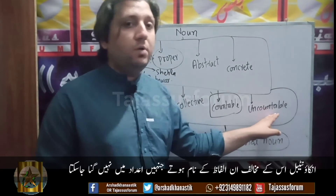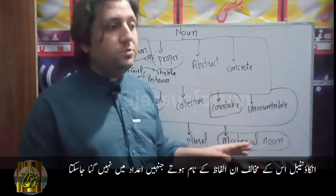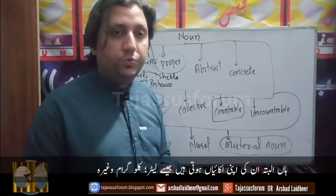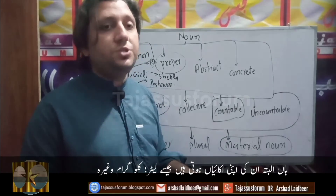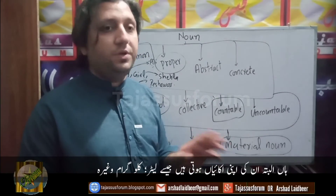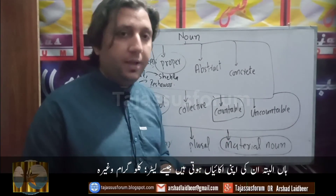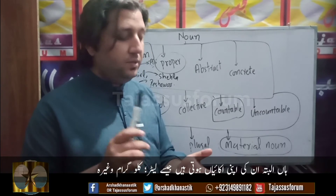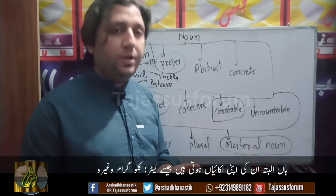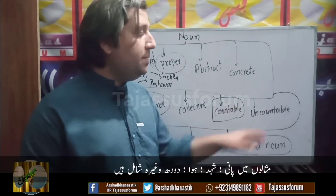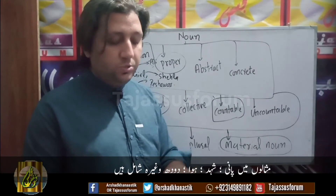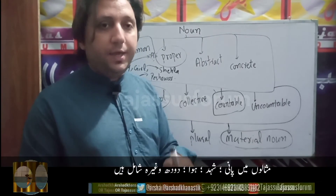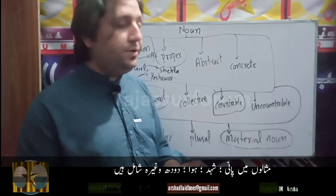On the other hand, uncountable nouns are the names of things that are impossible to count in one, two, three. Instead, we can use specific units for their measurement, like litres or kilograms, etc. The examples of uncountable noun include water, honey, milk, air, etc.